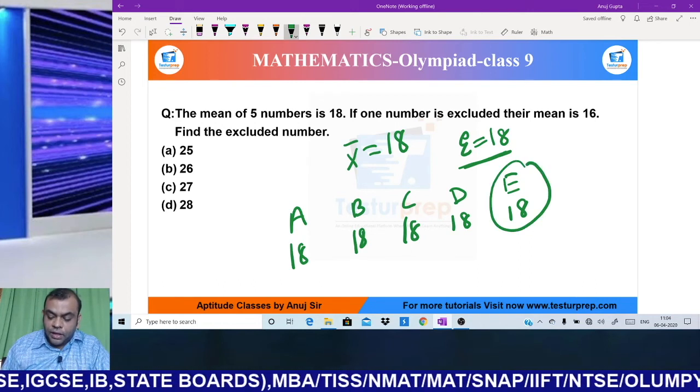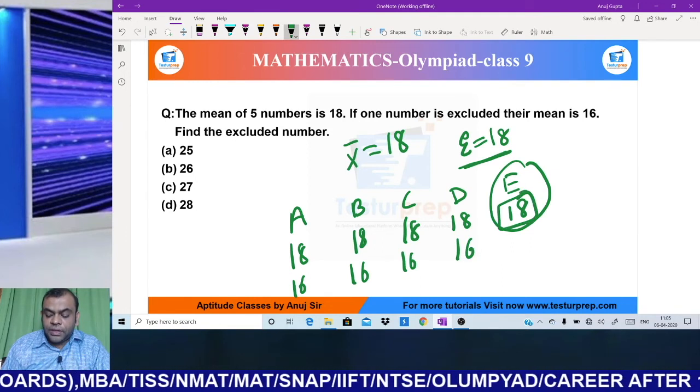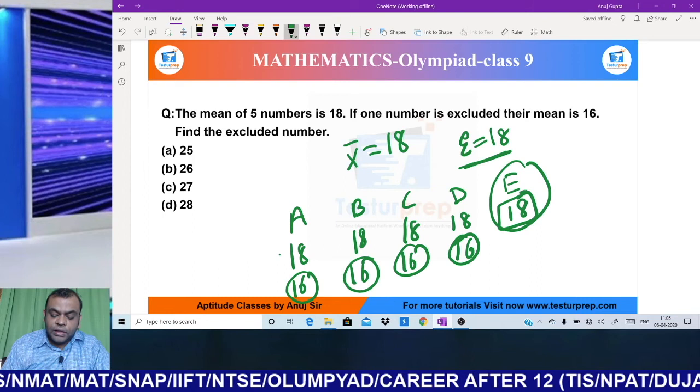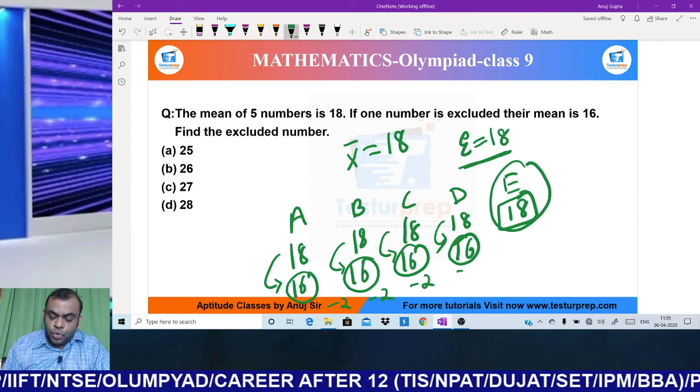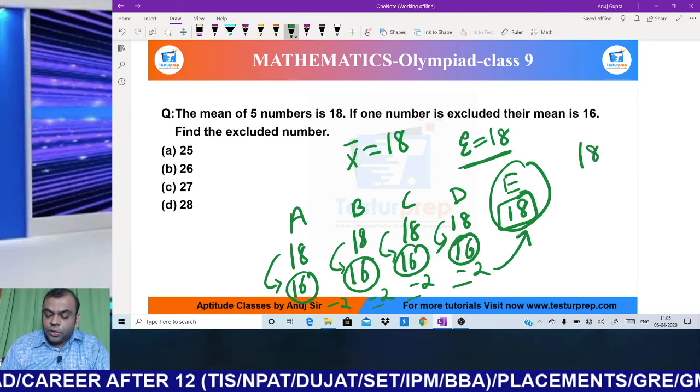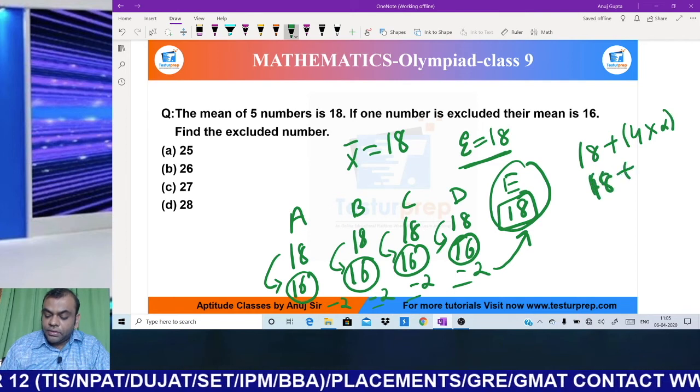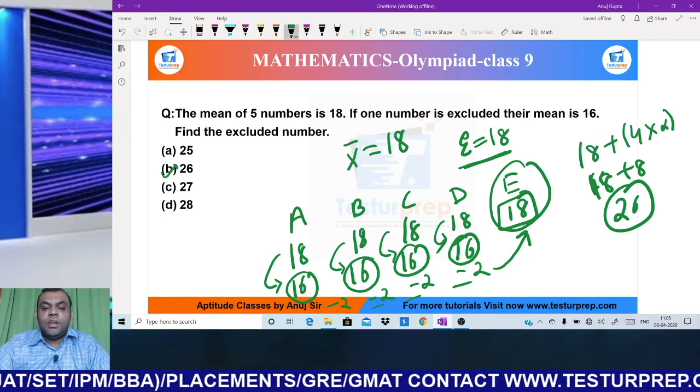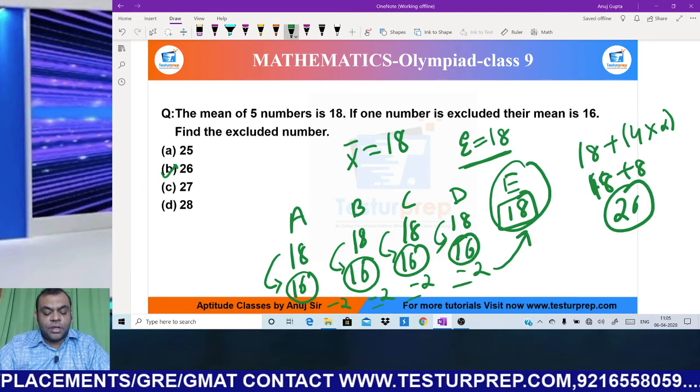This means E took their share of 18 plus took extra from everyone else, which is why everyone's share decreased. Everyone had 2 less, so E took 2 from each of the 4 people. So E took 18 plus 8 = 26 total. Hence my answer is 26. E took their average share of 26, which includes 18 of their own and 8 taken from others.